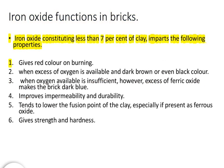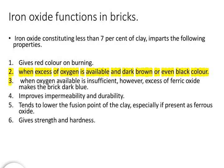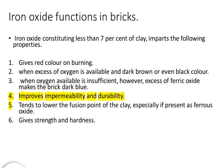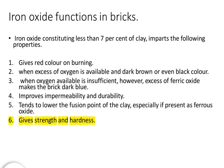Iron oxide functions in bricks. Iron oxide constituting less than 7% of clay imparts the following properties: 1. Gives red color on burning. 2. Dark brown or even black color when excess of oxygen is available. 3. Excess of ferric oxide makes the brick dark blue when oxygen available is insufficient. 4. Improves impermeability and durability. 5. Tends to lower the fusion point of the clay, especially if present as ferrous oxide. 6. Gives strength and hardness.